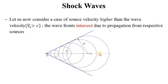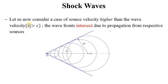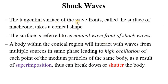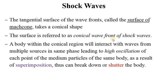When Vs is greater than C, the wave fronts intersect. At some points you can see the position of the source and where the wave has reached. The wave fronts intersect to produce a shape, and the tangential surface of the wave front — called the surface of the Mach cone — takes a conical shape. This surface is referred to as the conical wave front of shock waves.